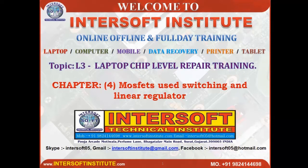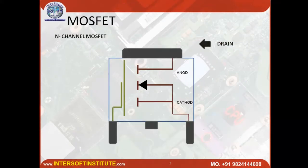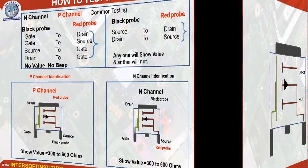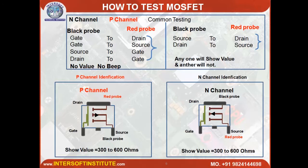MOSFETs are used in switching and linear regulators. The N-channel MOSFET has drain, source, and gate connections. Its symbol shows the drain connected to a diode through the cathode and the source connected to the anode. There are two types: N-channel and P-channel MOSFETs. To test them, place the black probe and red probe alternately — gate to drain and drain to gate. Gate to source and source to gate should show no beep and no value, which means the MOSFET may be okay.